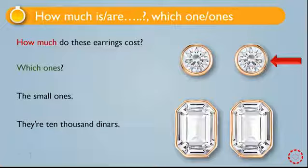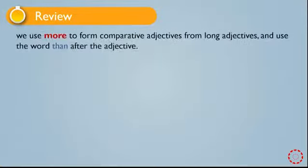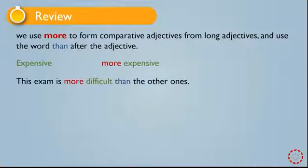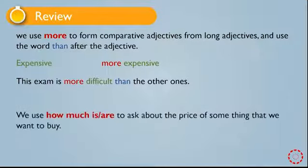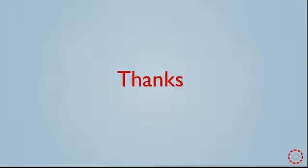They are 10,000 dinars. To summarize: we use more to form comparative adjectives from long adjectives and use the word than after the adjective — for example, expensive, more expensive; this exam is more difficult than the other ones. We use how much is or how much are to ask about the price of something you want to buy, and which one or which ones to choose one thing among the others. This is today's lesson. Thank you for watching and listening. I hope you are all doing well. Goodbye.